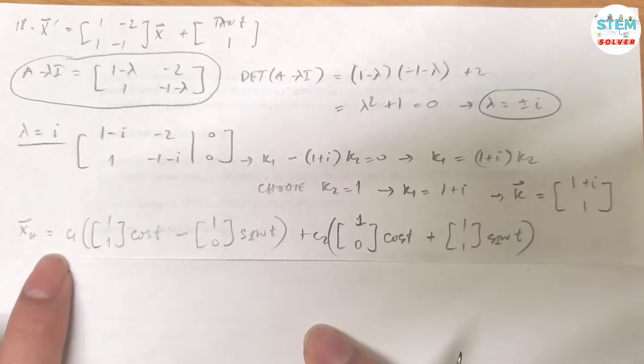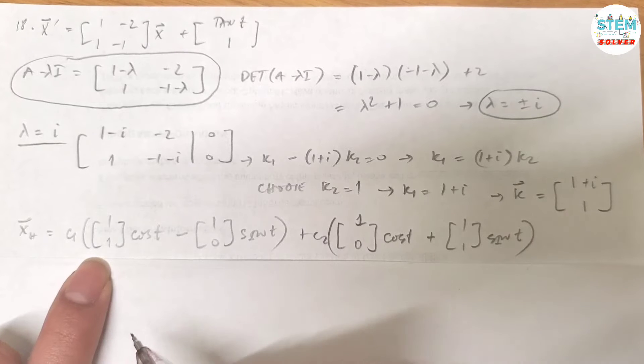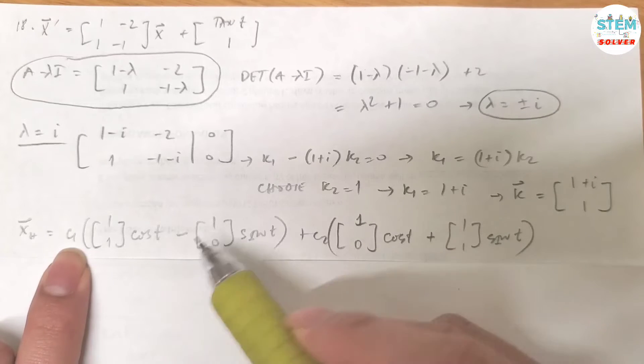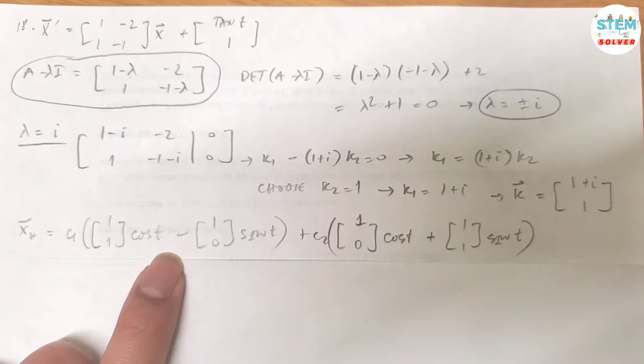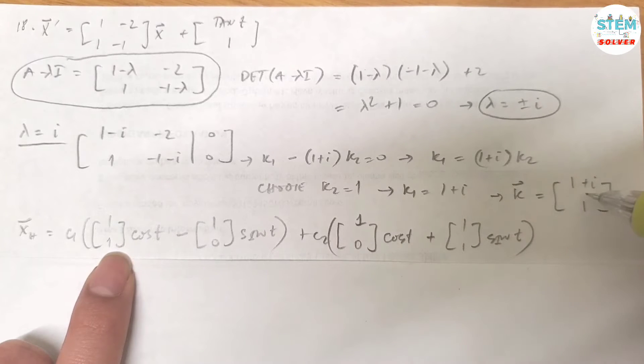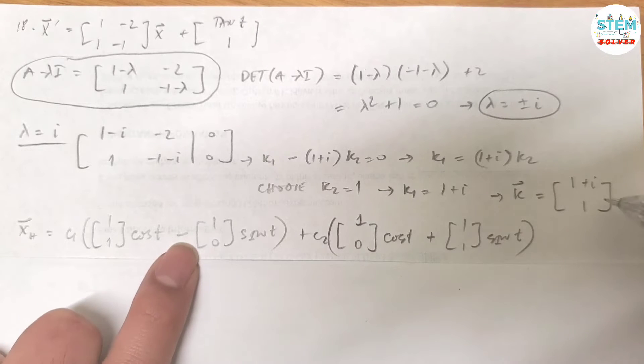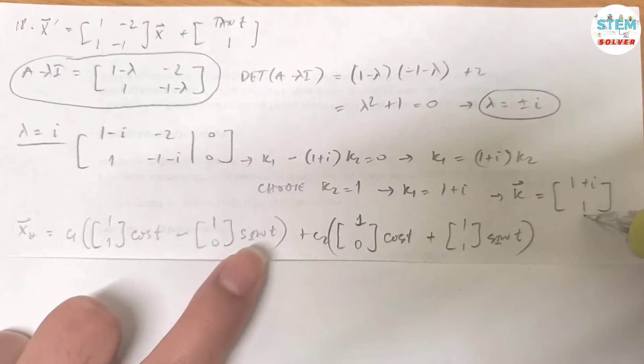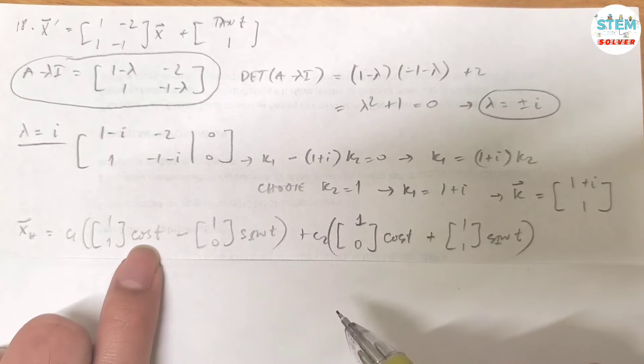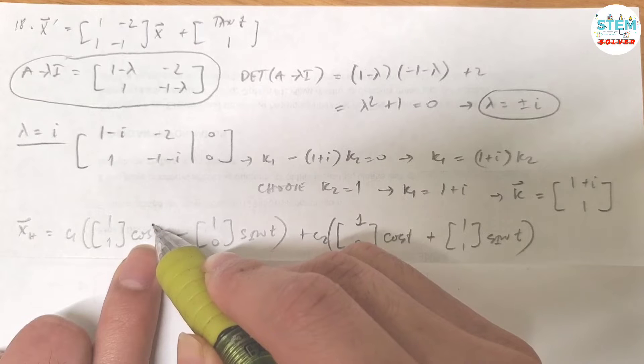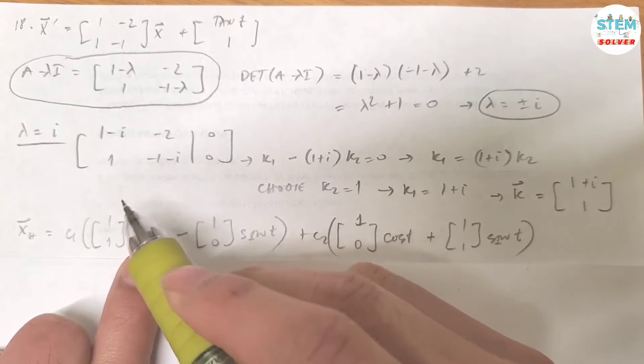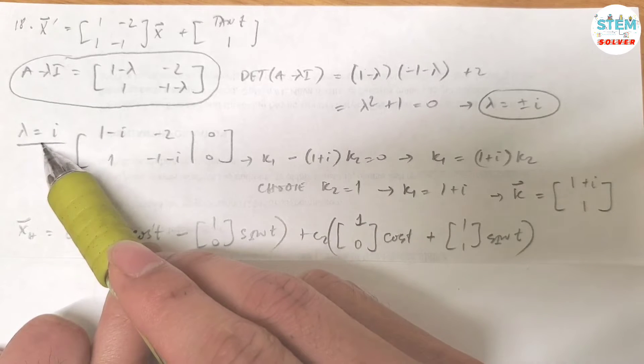Then it's time to write your homogeneous solution. So it is equal to c1 times vector x1 plus c2 times vector x2. What is vector x1? It is equal to the real part of vector k, which is [1, 1] times cos(t). So why cos(t)? This is actually cos(1·t). And where does the 1 come from? It comes from the imaginary part of vector lambda.